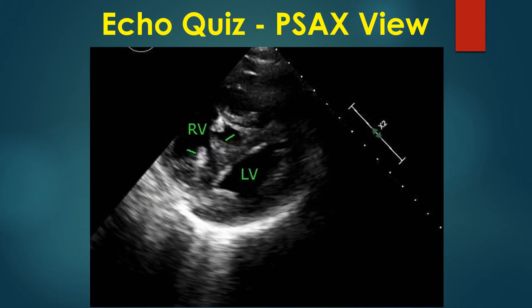In the echo image shown, right ventricular trabeculae can be seen as grossly hypertrophied as part of severe right ventricular hypertrophy, pointed by green markers.